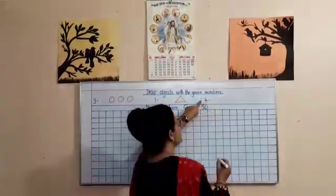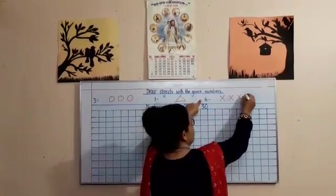This is number 4. You have to draw 4 objects. You can draw anything. You can write x. 1, 2, 3, 4, and then you have to count them. 1, 2, 3, 4. Wasn't that nice? So you need to practice this in your rough copy.